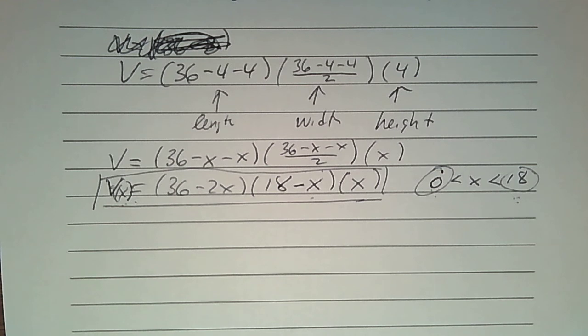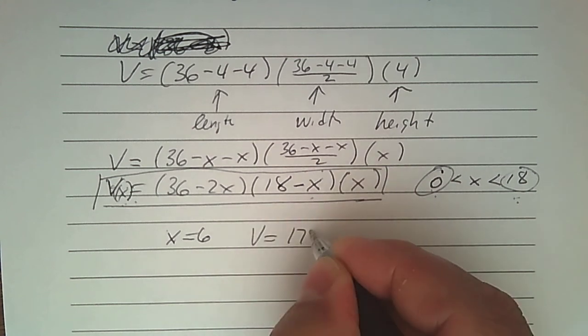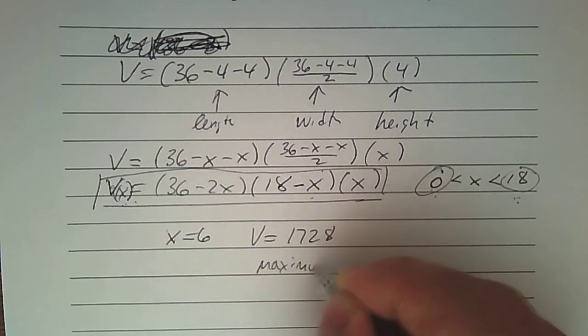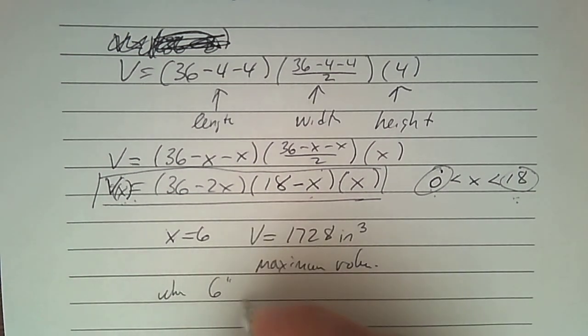Notice that the point I got here was 6 and 1728 as a point for the maximum point. So what does that mean? That means that when x is equal to 6, that means the maximum volume is 1728 for that box. So the question was, what is the largest volume he can make? And the answer for the maximum volume is the y-coordinate there, so it's 1728, and it'd be inches cubed when 6-inch squares are used.